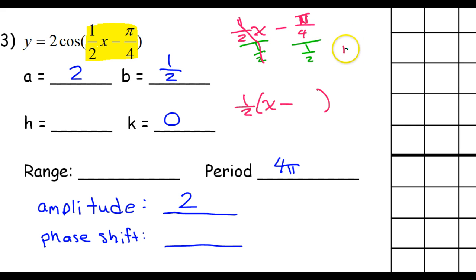If you divide by a fraction, that's the same thing as multiplying by the reciprocal. So, π over 4 divided by 1 half is the same thing as π over 4 times 2. That's the same thing as 2π over 4, which if you reduce this, the 2 goes into the 4 twice. So, this is going to be π over 2. That is our h value.